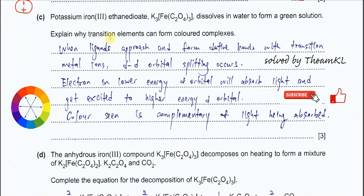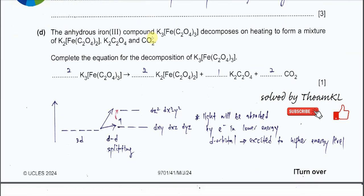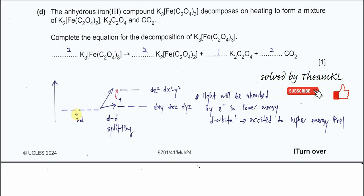Part C: Potassium iron(III) ethanedioate dissolves in water to form a green solution. Explain why transition elements can form colored complexes. First, you need to relate to the d-d splitting. Whenever a ligand approaches the transition metal cation, the d orbitals are initially all degenerate at the same energy level. When the ligand approaches this metal cation, some of the d orbitals will split to higher energy level.